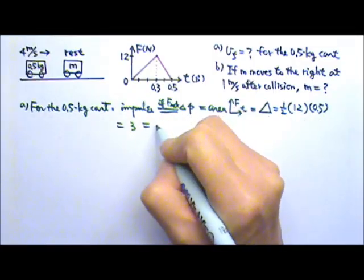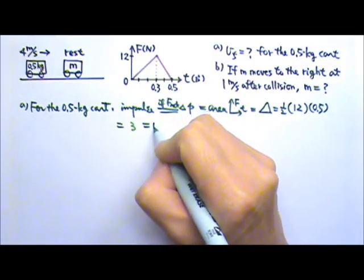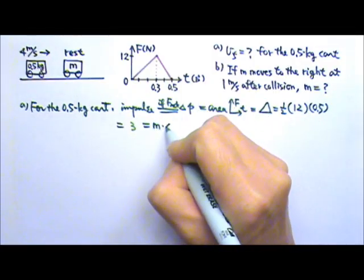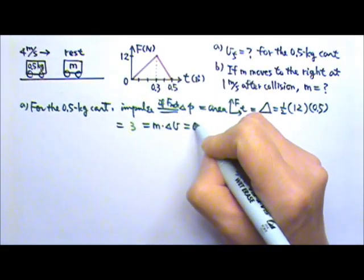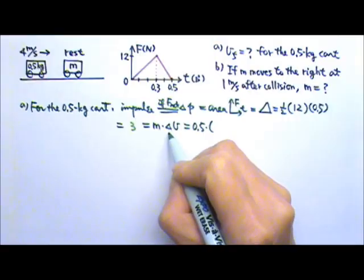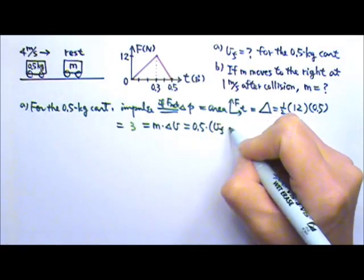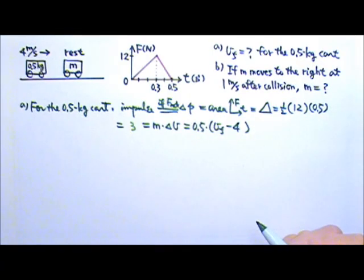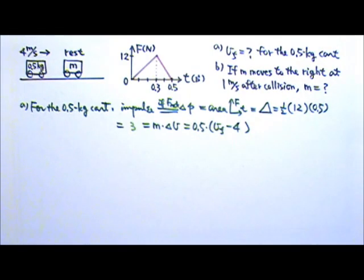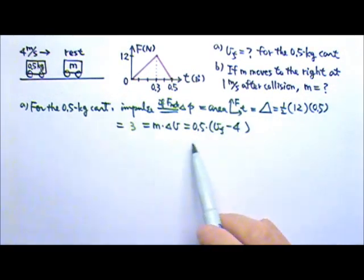This equals the change in momentum, which is M times delta V. That would be 0.5 kg times delta V — the final velocity minus the initial velocity of 4. We can solve for V_final. But there is a mistake somewhere here — can you identify that mistake?